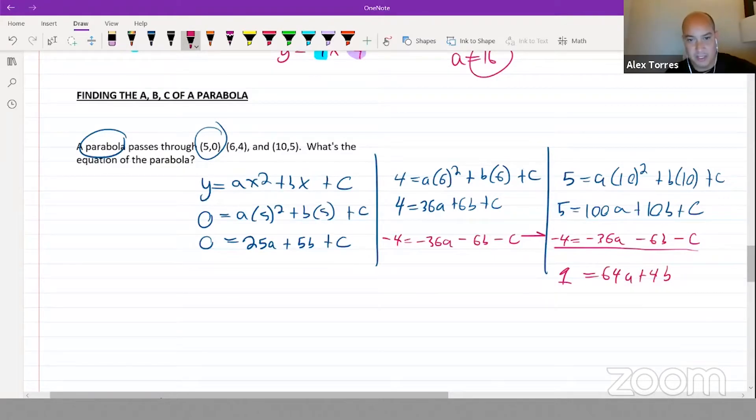Now we can do the same thing. Let's take this equation and bring it down here. Negative four equals negative 36a minus 6b minus c becomes negative four equals negative 11a minus b, and the c's cancel out.